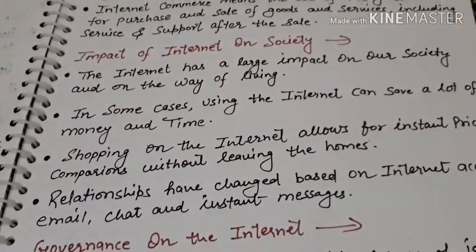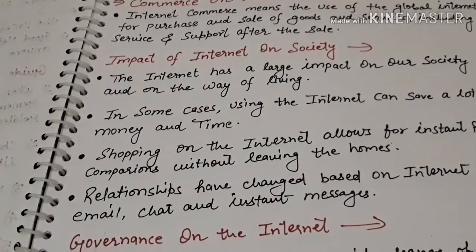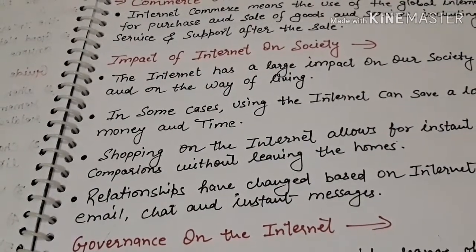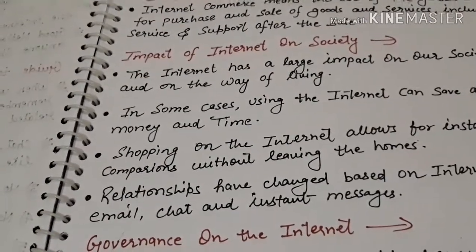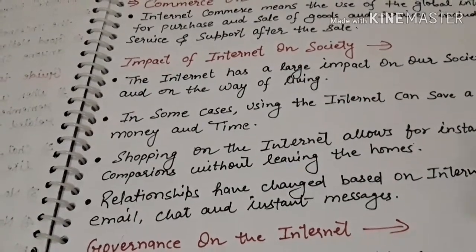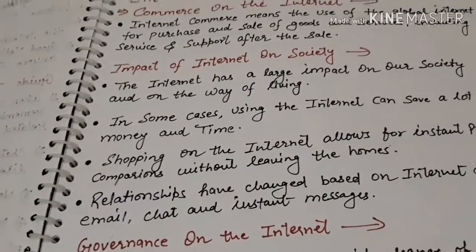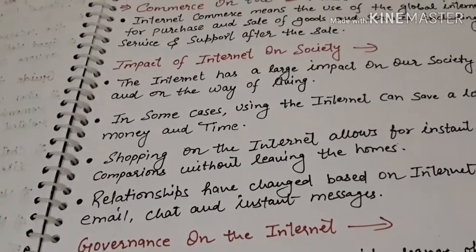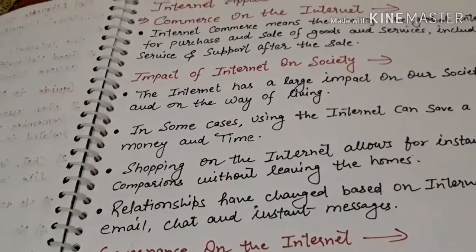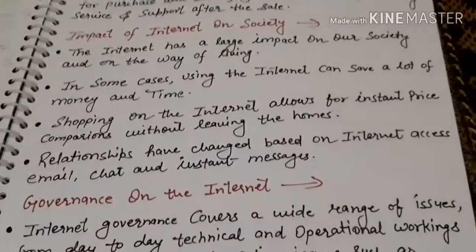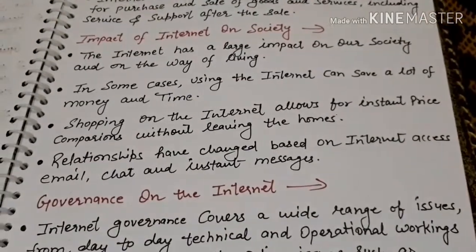The next topic is the impact of the internet on society. When we do online shopping or bank-related work — when there was no internet, what did we do? When we do online shopping, we need to deposit money or withdraw. We need to do e-banking. The impact on your time and money is significant — using the internet can save a lot of money and time.